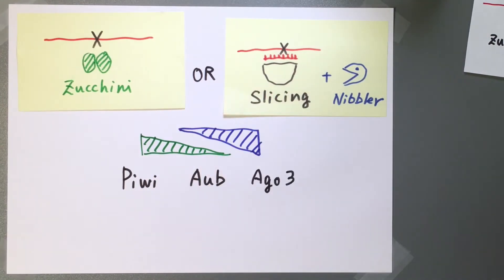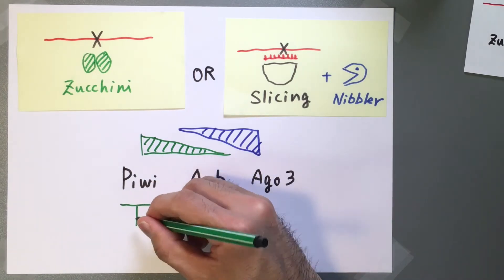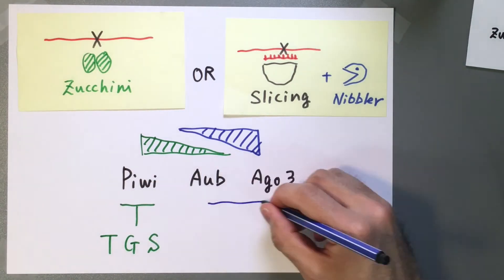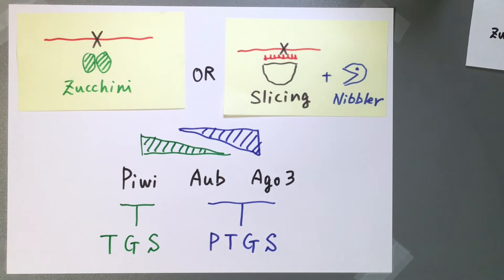whereas Nibbler-mediated 3' end formation dominates for Ago3. This shapes the piRNA populations responsible for transcriptional and post-transcriptional gene silencing.